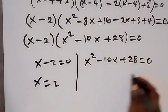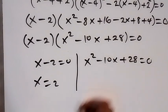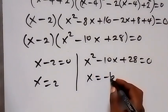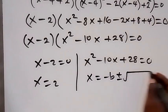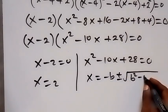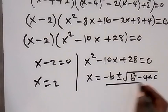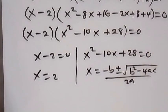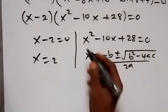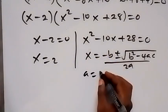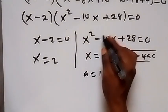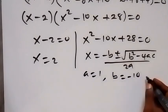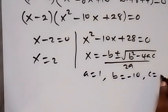We can use the quadratic formula: x equals minus b plus or minus square root of b squared minus 4ac, all over 2a. In this problem, a is the coefficient of x squared, so a equals 1; b is the coefficient of x, so b equals minus 10; and c equals 28.